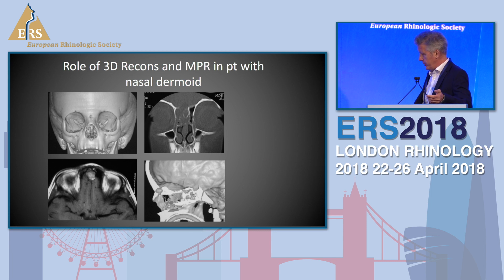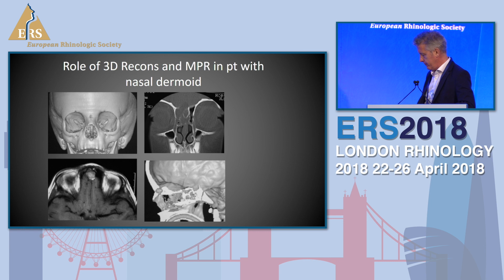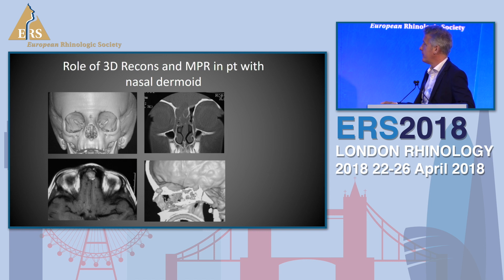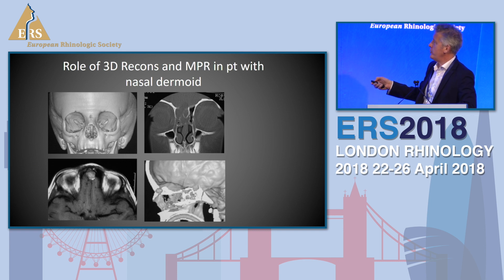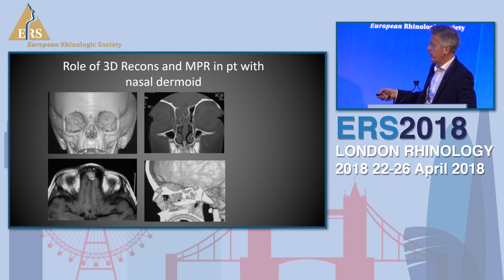For example, this patient with a nasal dermoid - you can use the combination of 3D to see the nasal defect, the coronal CT to see the normal anatomy, and the sagittal reconstruction to see where the position of the dermoid is.